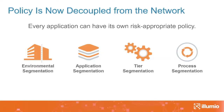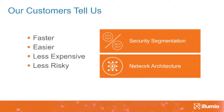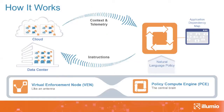You can do environmental, application, tier, or process segmentation — all implemented without any network impact. Our customers tell us this approach is faster, easier, and less expensive; you don't have to re-architect your network. It's also less risky in that you will not break the network or impact business as usual.